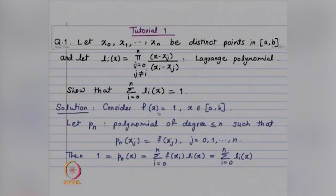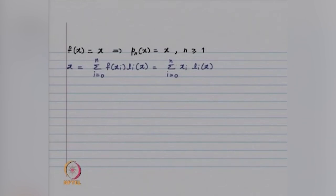If instead of f(x) = 1 we look at f(x) = x, then for n ≥ 1, p_n equals the function itself, giving us Σ x_i l_i(x) = x, i = 0 to n. Similarly, for n ≥ 2, Σ x_i² l_i(x) = x², and so on.